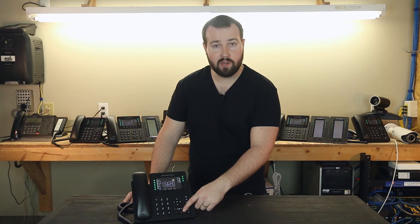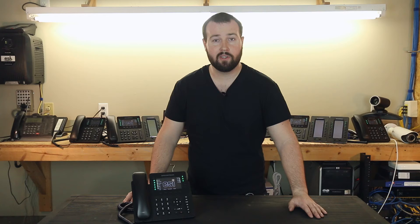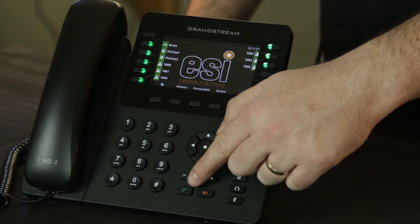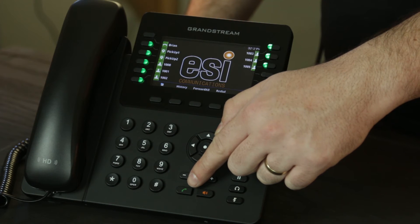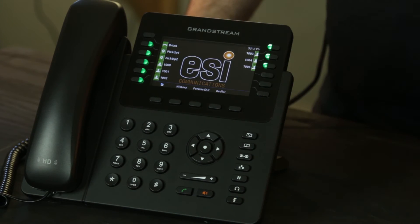And here we have the red speakerphone button. You can press this button to initiate a call on speakerphone. Next to the speakerphone button is a little green button that looks like a handset. Press this button and you can have quick access to your most recent call history.